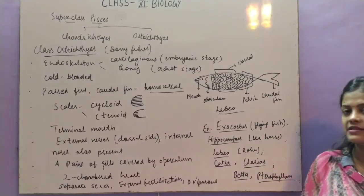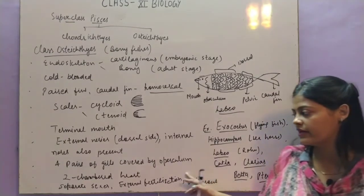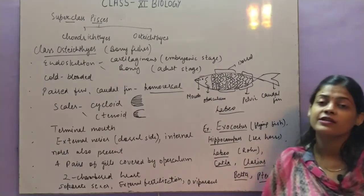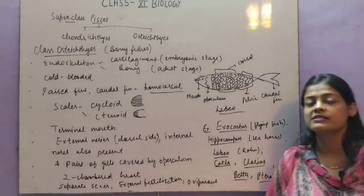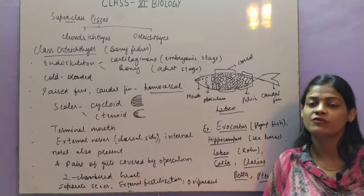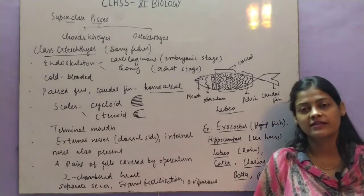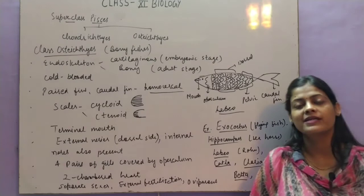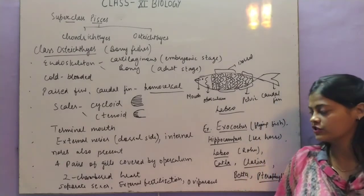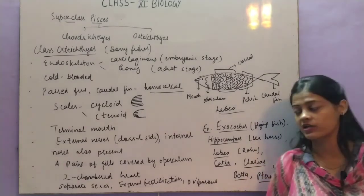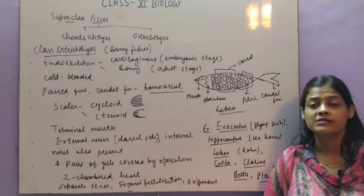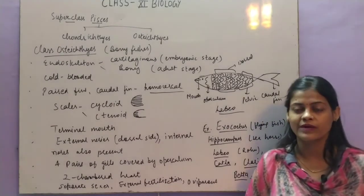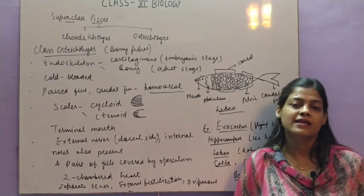The heart is again two-chambered. Sexes are again separate, but they have external fertilization — they release their male and female gametes into water for fertilization. They don't have claspers like Chondrichthyes. Most of them are oviparous — they lay eggs.